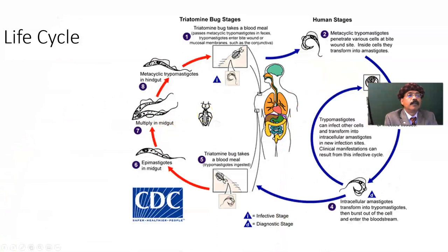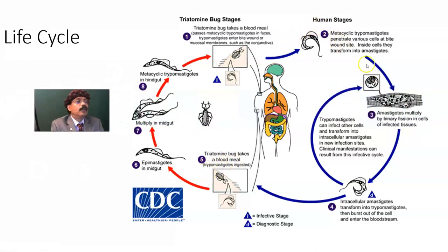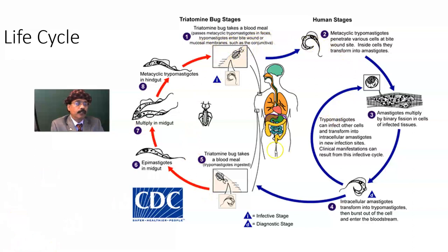Here is the reduviid bug biting. The triatomine bug takes a blood meal. Here are the human stages — changes in the human. The bug takes a blood meal and passes metacyclic trypomastigotes in feces. The trypomastigotes enter the bite wound or mucous membrane such as the conjunctiva. This is the life cycle diagram, taken from the CDC website.